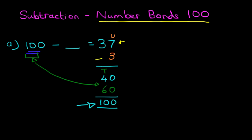Well, we had 3, and we also added 60. So we added 63. That is our answer. 100 minus 63 equals 37.